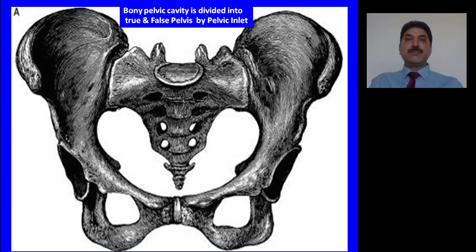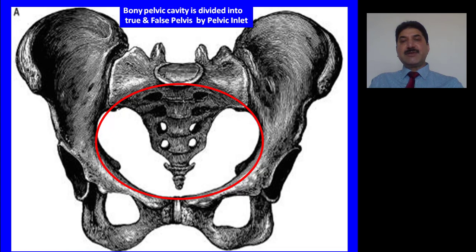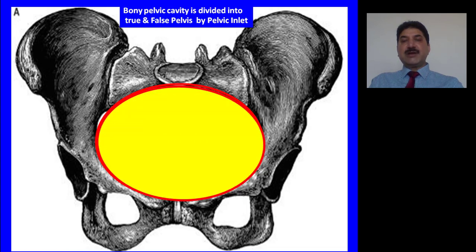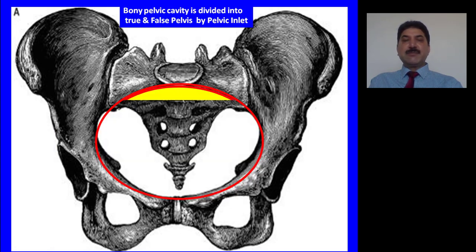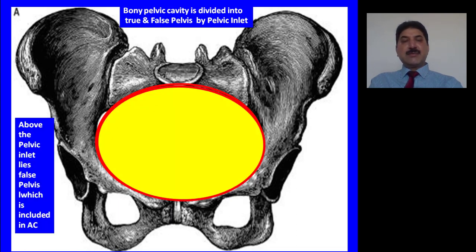Both cavities are lined by peritoneum. The bony pelvic cavity is composed of sacrum and coccyx posteriorly and the two hip bones anterolaterally. This cavity is divided by the inlet of the pelvis into false and true pelvis. False pelvic cavity lies above the pelvic brim and true pelvic cavity lies below the pelvic brim. False pelvis is included within the abdominal cavity. The pelvic brim divides the pelvic cavity into true and false pelvis, and above the pelvic inlet lies false pelvis which is included in the abdominal cavity.